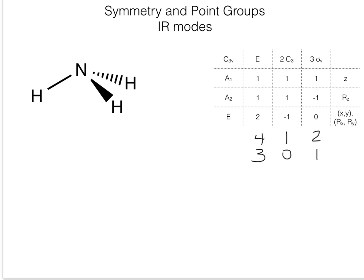We need to multiply the contribution per atom by the number of unshifted atoms and also by the number of operations. The number of operations is indicated in the character table: for the identity operation it's one, for C3 there are two, and for the reflection planes there are three. Multiplying each of these gives the reducible representation: twelve, zero, and six.